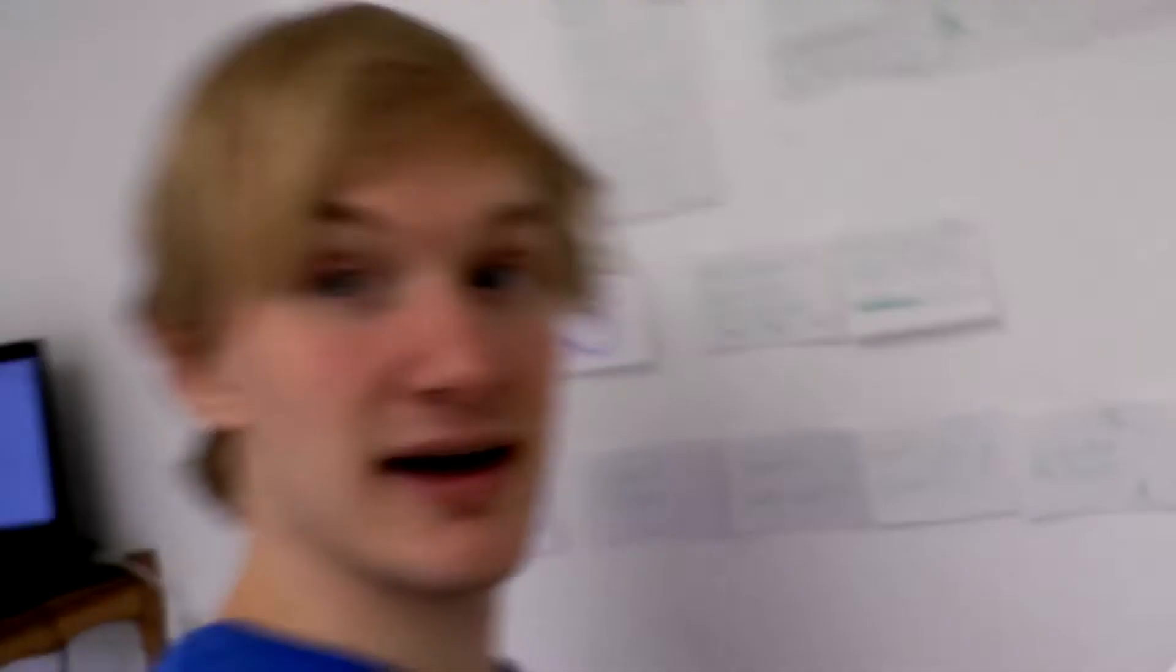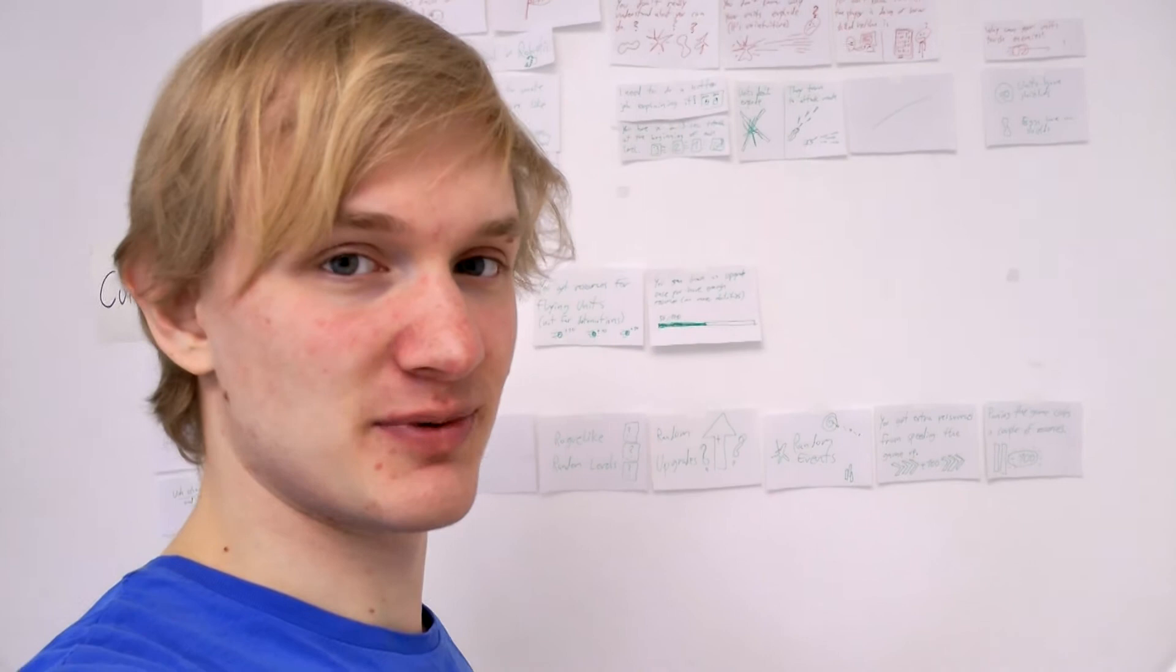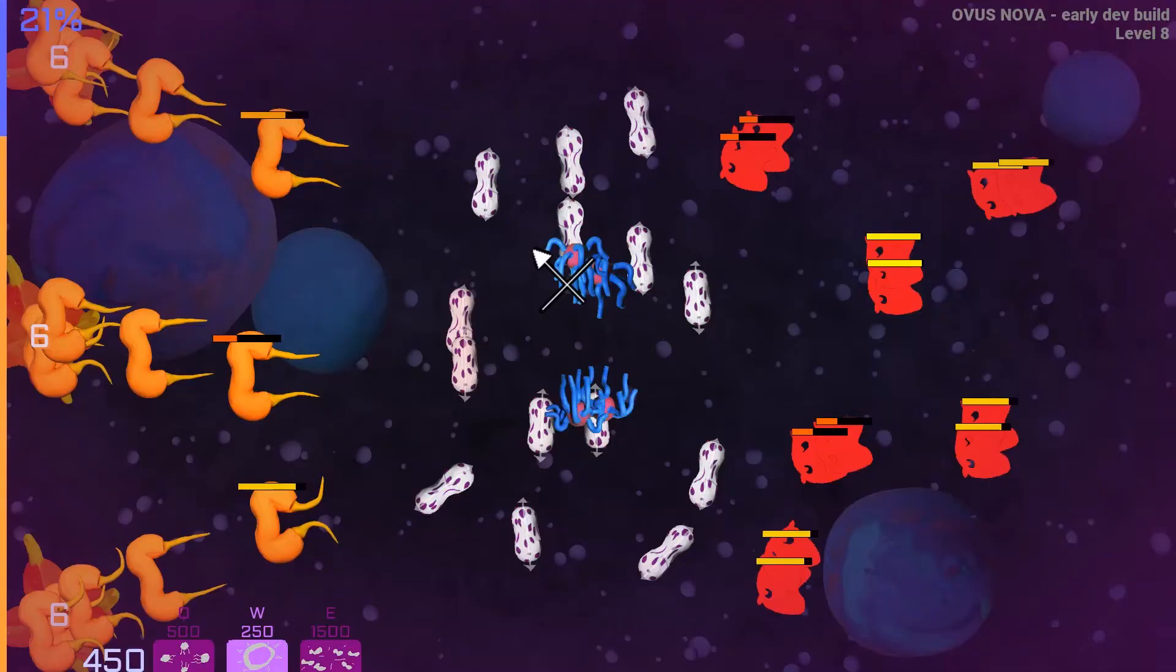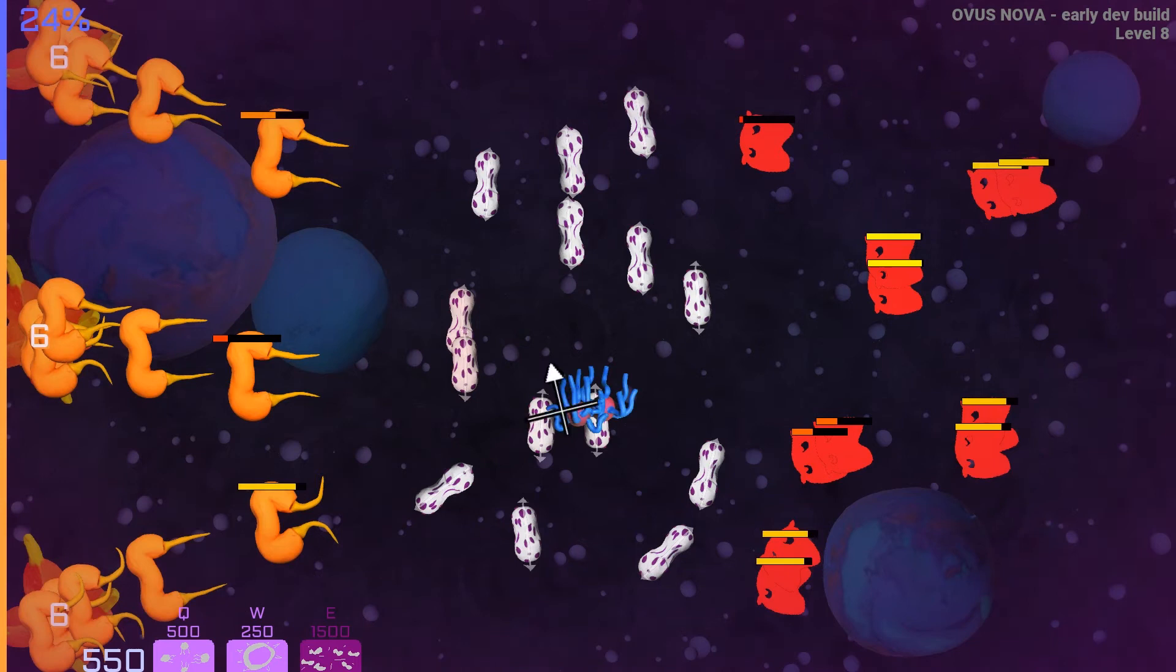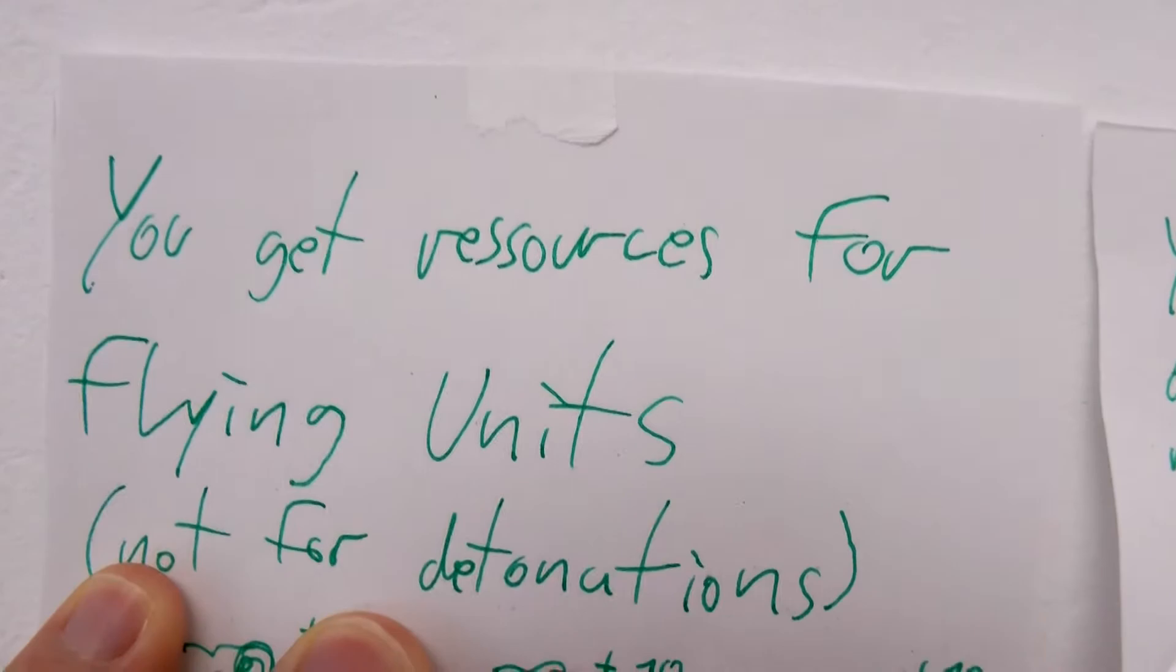And then the next problem is here. The optimal strategy is way too obvious, you can't get creative. And my favorite thing to do when that happens is I just look at what is the optimal strategy, what is the player doing all the time, and then I try to encourage players to do exactly the opposite, which usually works out pretty well. Currently the problem is that the optimal strategy is to get as greedy as possible with your eggs, to create as many eggs as possible. And I think I found a way to counteract that.